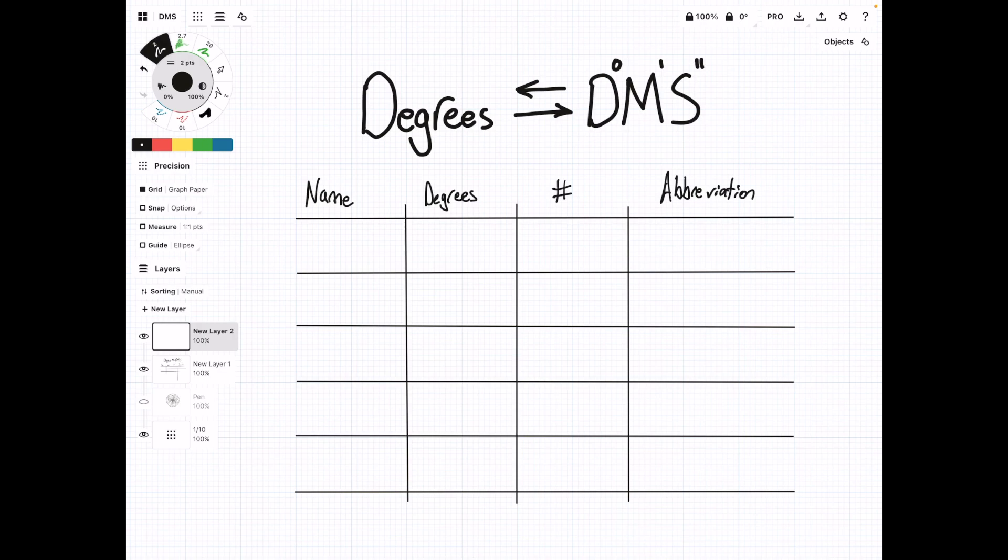So we're just going to start filling it out. At the very top, we have our degrees, denoted with a little circle symbol. There's one degree in one degree, and then the abbreviation is DEG. These two columns are going to represent the same information, but just put it a different way.